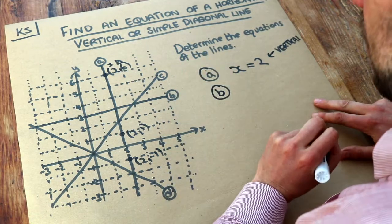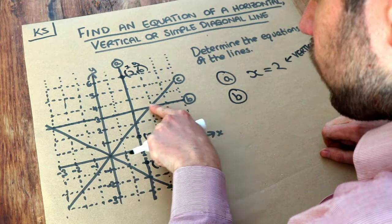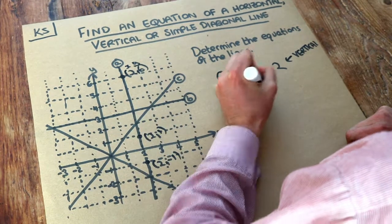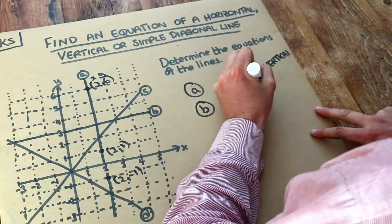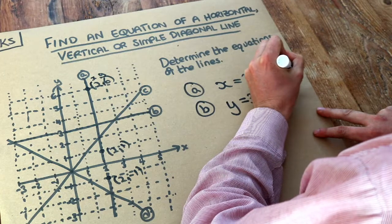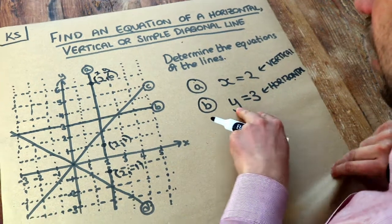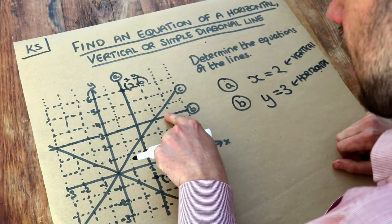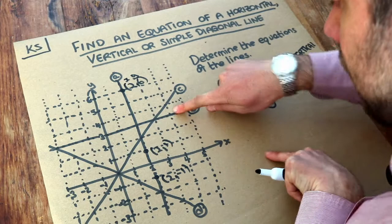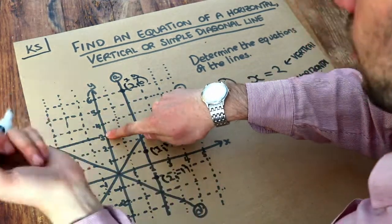It's very similar for line B. The B line cuts the y axis at 3, so the equation will be y equals 3. This is a rule that has to be true for any point on that line. If we take any point on B, the y value will always be 3. For example, the point (4, 3) has a y value of 3, and the point (0, 3) also has a y value of 3.